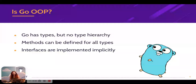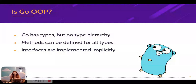And lastly, interfaces are implemented implicitly. Interfaces do exist in Go — they allow for polymorphism and abstraction of some sort — but they are implemented implicitly. So the struct implementing an interface doesn't even need to know of its existence. This makes interfaces much more lightweight than in other OOP languages such as Java or C#, and they're also much more common in Go code.